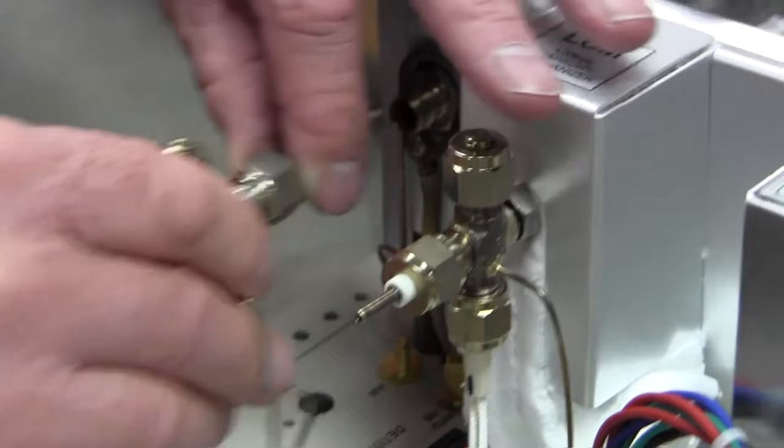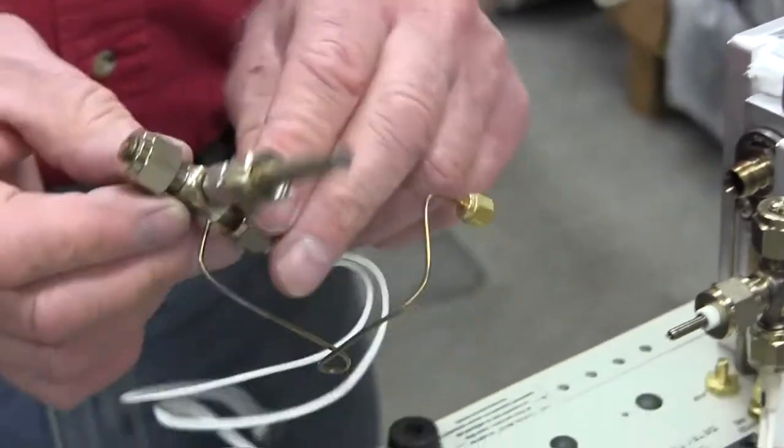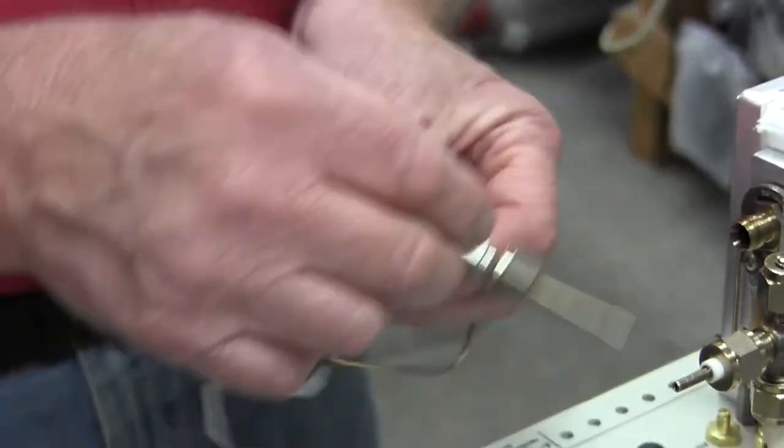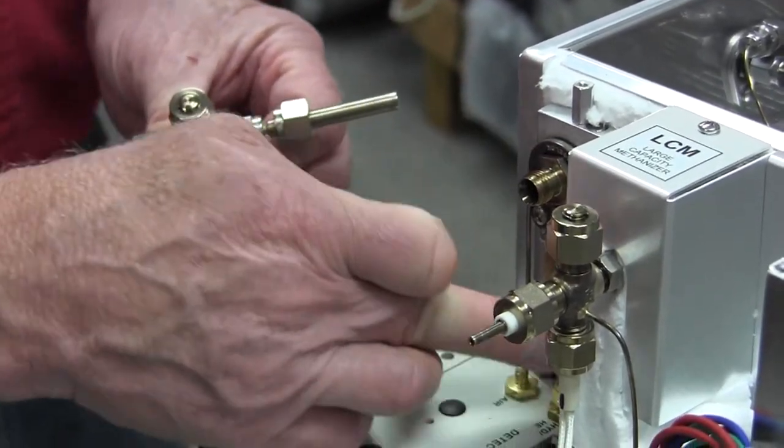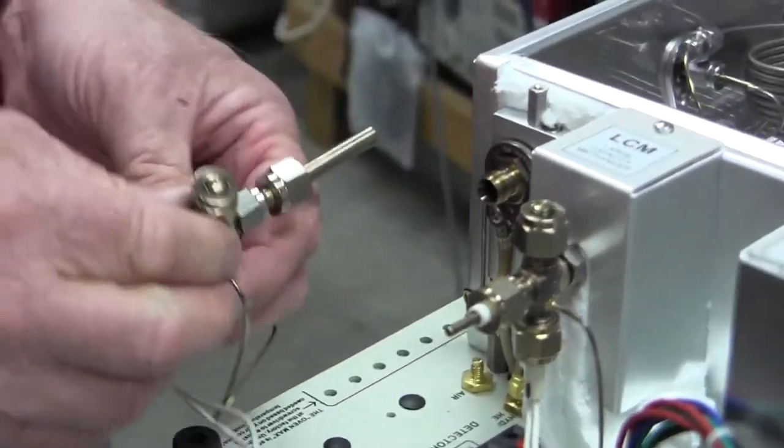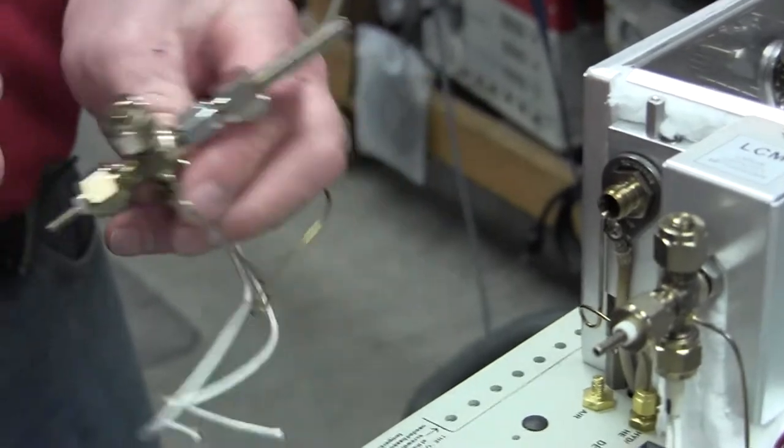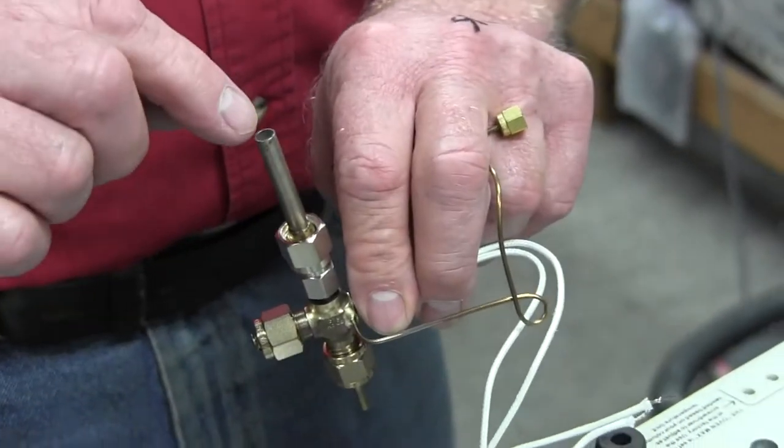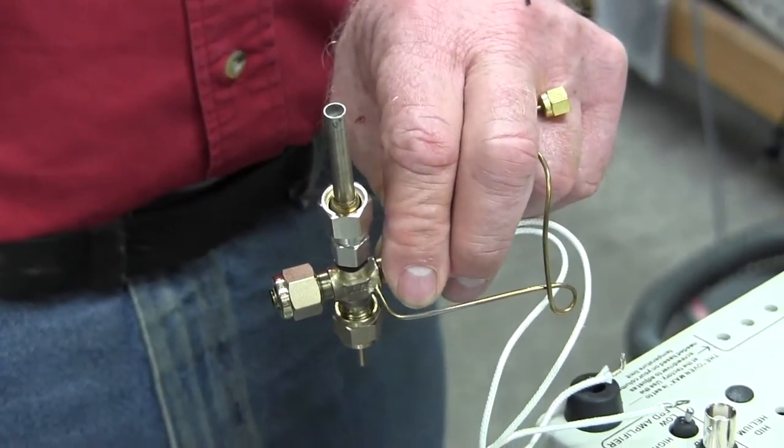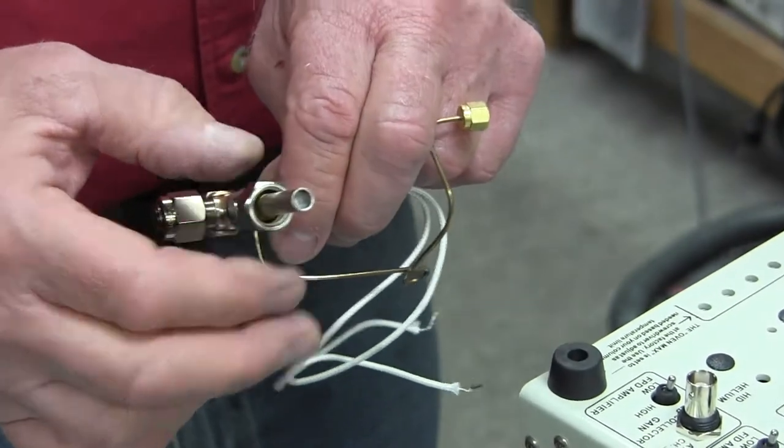Then I can pull this whole assembly out of the bulkhead fitting. We call this the bulkhead fitting, that's where the hydrogen comes up into and then this fits into that. This tube is where the nickel catalyst is packed.